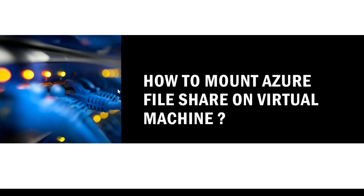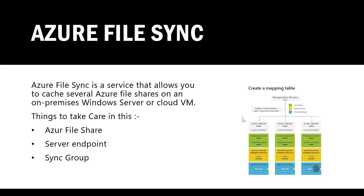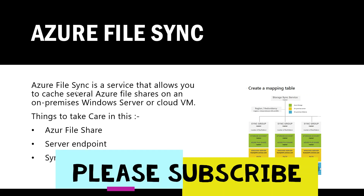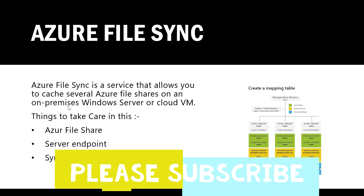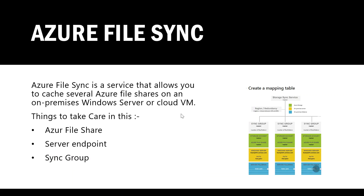What I'm going to do in this video is show you how we can mount the Azure file share on a virtual machine. Before going there, I want to discuss Azure file sync. Azure file sync is a service that allows you to cache several Azure file shares on an on-premises Windows server or cloud VM. There will be a location on the Windows server which you cache on Azure, and that caching is taken care of with the help of Azure file sync service.